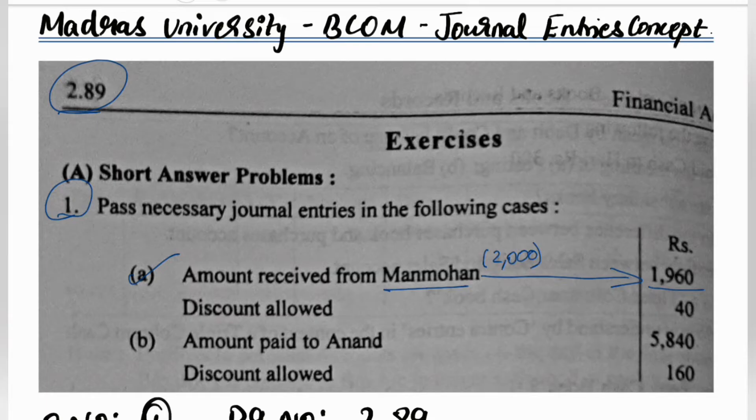I received the amount of $1960 and I have allowed discount of $40. So discount allowed is $40, and discount received is $1960. Discount allowed is $40.